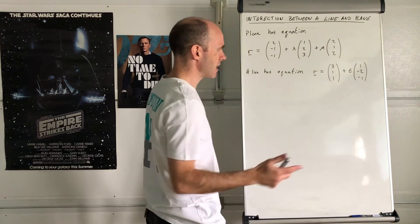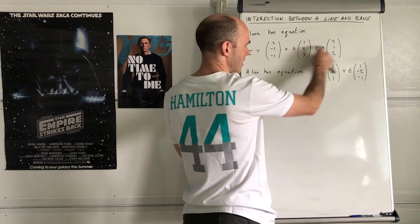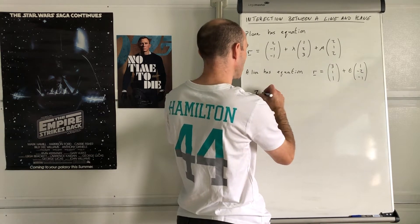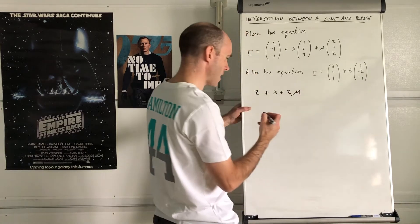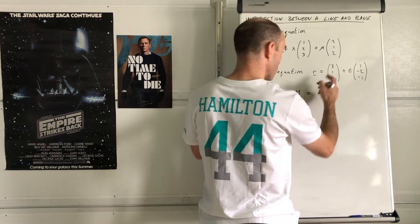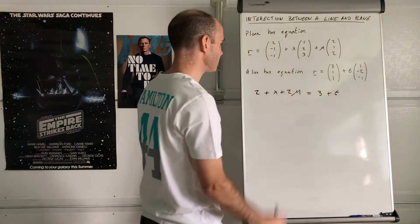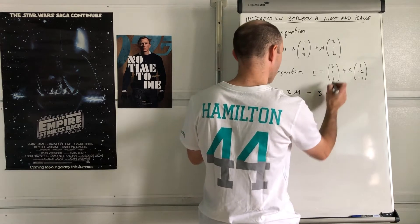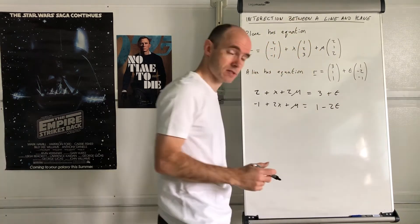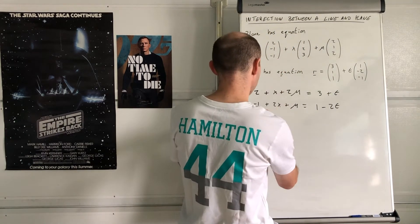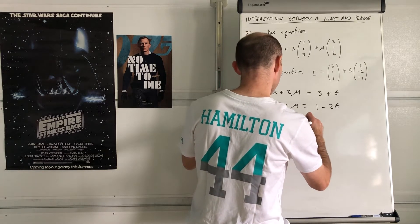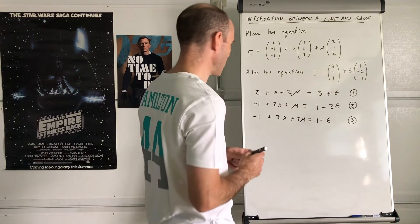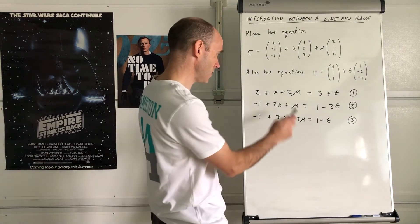Both equations have r = ..., and the top line represents the x coordinate, the middle line y, the bottom line z. Setting the x coordinates equal: 2 + λ + 2μ = 3 + t. Setting y equal: -1 + 2λ + μ = 2 - 2t. Setting z equal: -1 + 3λ + 2μ = 1 - t. Number these equations 1, 2, 3. They are simultaneous equations with three unknowns: λ, μ, and t.